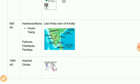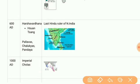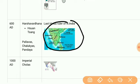Then we have Harsha Vardhana of the Vardhana dynasty. The Kanauj assembly and the Prayag assembly were there, and the Chinese traveller Xuanzang visited Harsha's assembly. In the southern region, we have the Chalukyas, Pallavas, and Pandyas again.